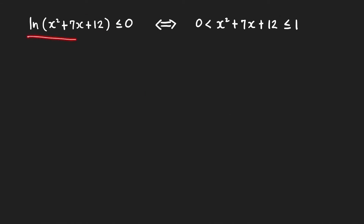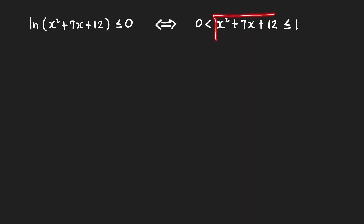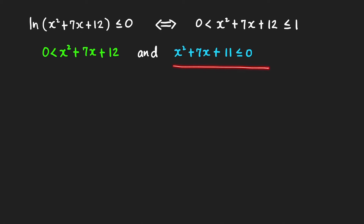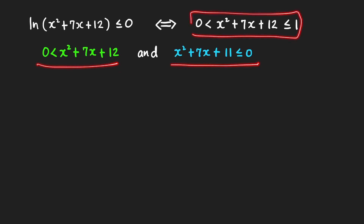So this inequality is equivalent to the compound inequality where the expression x squared plus 7x plus 12 must be greater than 0 and less than or equal to 1. To solve this compound inequality we split it into two inequalities, and since we need to satisfy both, we use 'and' here. We then take the intersection of their solution sets to get the solution to the original inequality.